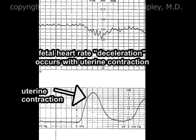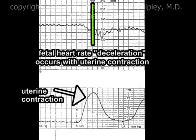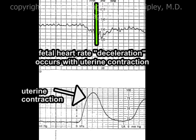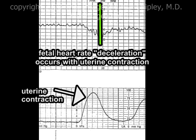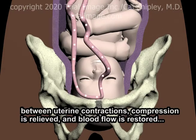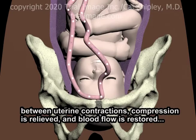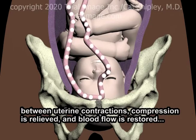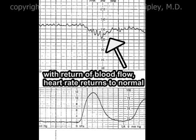The deceleration can also be heard via fetal Doppler. When the uterus relaxes between contractions, umbilical cord compression is relieved and blood flow to the fetus is restored. With the return of normal blood flow to the fetus, the deceleration resolves and heart rate returns to normal.